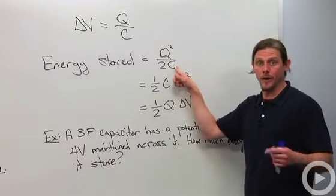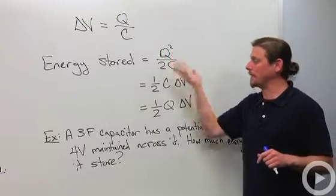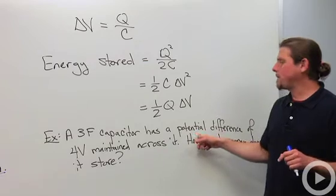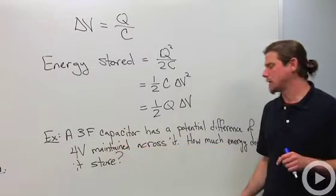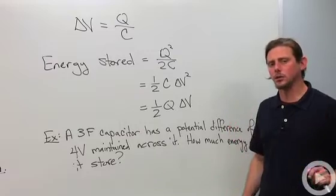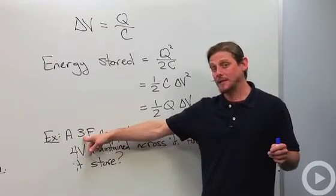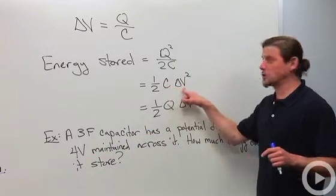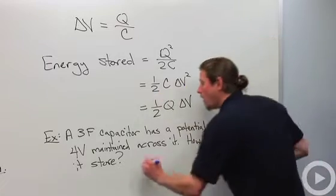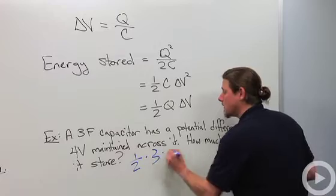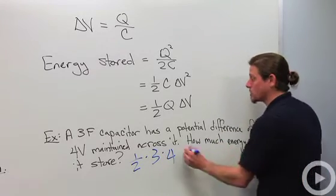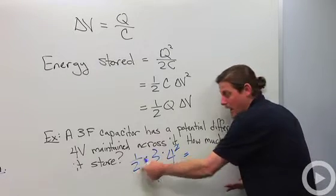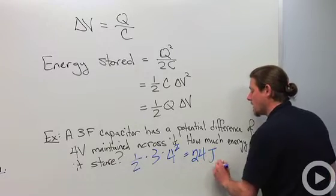Let's do an example. I've got a 3 farad capacitor with a potential difference of 4 volts maintained across it, and I want to know how much energy it stores. I have capacitance and potential difference, so I'll use: energy = one-half × C × ΔV². That's one-half × 3 × 4² = one-half × 3 × 16 = 8 × 3 = 24 joules.